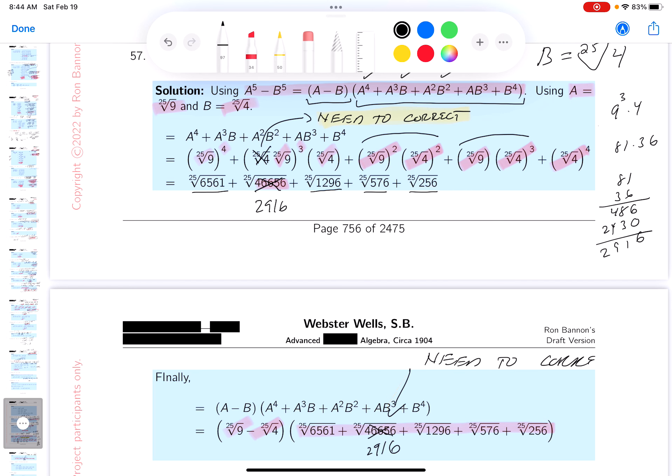When you get the notes, you're not going to see that, because I'm going to correct it. Let me just take a look if I got that—the 25th root of 6561, the 25th root of 2916, the 25th root of 1296, the 25th root of 576, and the 25th root of 256.